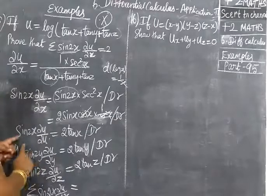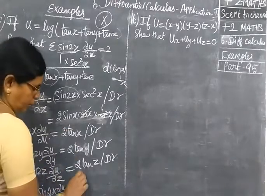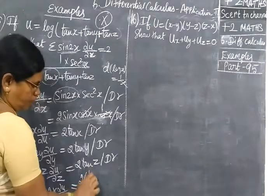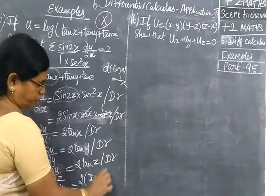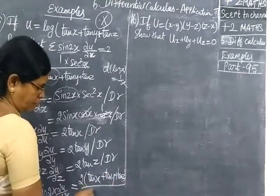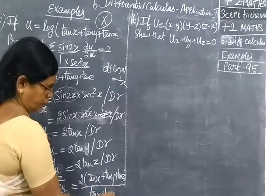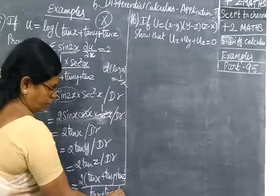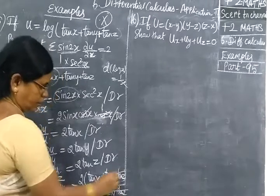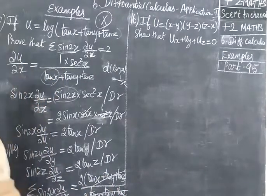Now adding all, the sigma notation Sigma sin 2x dy/dy. This is 2x, 2y, 2z. This is 2 common, we take 2 common tan x tan y tan z by denominator tan x plus tan y then tan z. So if we cancel we are getting 2.